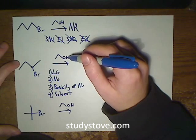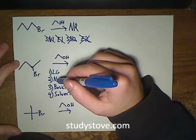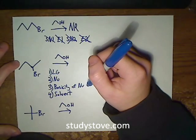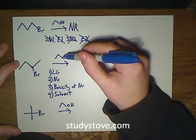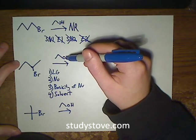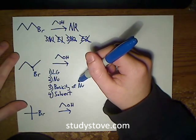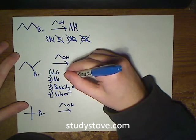So everything so far is pointing towards an SN1 reaction. And just to make sure, we'll look at the basicity. And like I said above, ethanol is just not a very strong base, so that rules out the elimination reactions. So everything here is pointing towards an SN1 reaction, and that is what we have.